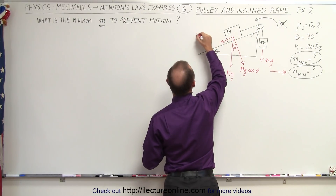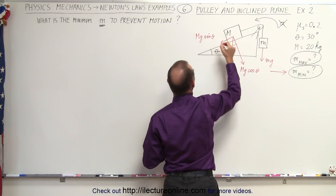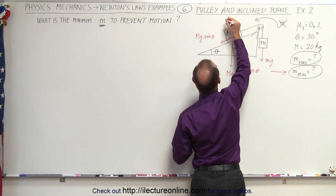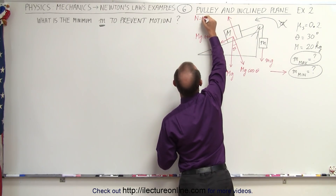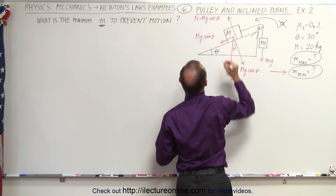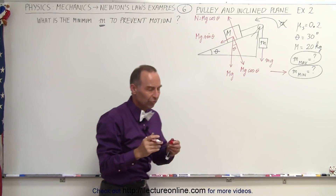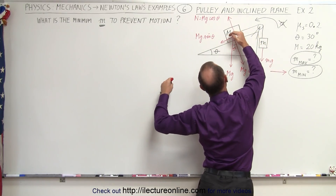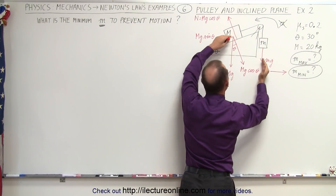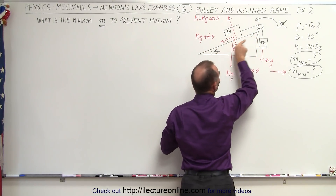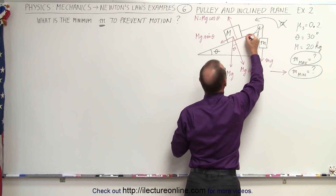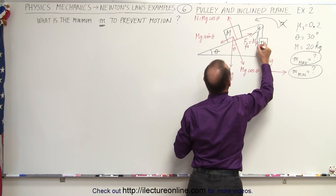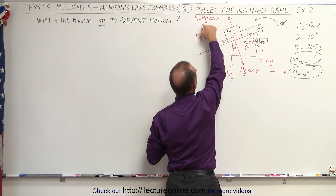The parallel component is mg times the sine of theta. We have the normal force pushing back in the opposite direction — the surface pushing back — which is equal to mg times the cosine of theta. We also have a friction force. Without the friction force, the whole system would accelerate in this direction, so what's preventing that acceleration is the friction force in the opposite direction. The friction force equals the normal force times mu sub s.